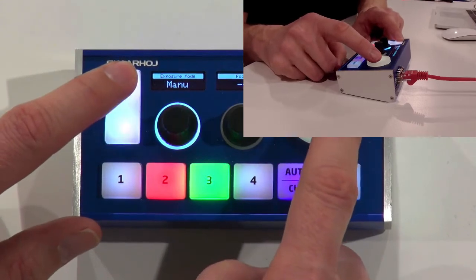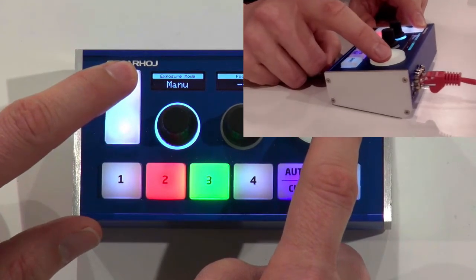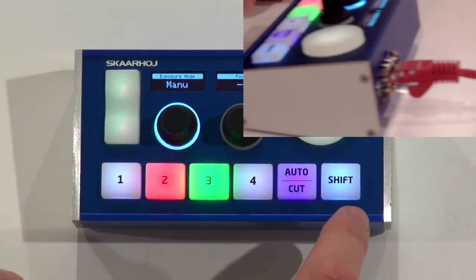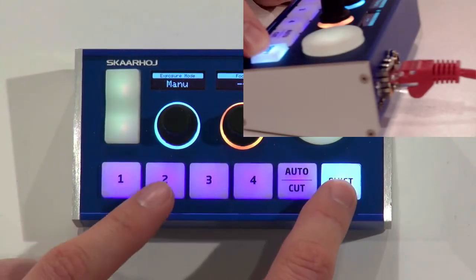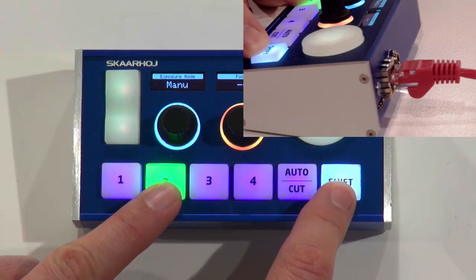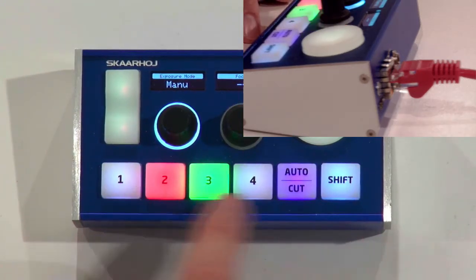Now let's just make a different preset. So I zoom a little bit. And I also use the joystick here to move the camera. Okay, so this is not pretty, but it's a preset we could store. So now I will hold the shift key and press and hold this button until it becomes green. And I have now stored that preset on number two.